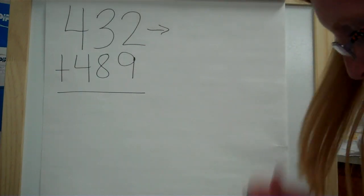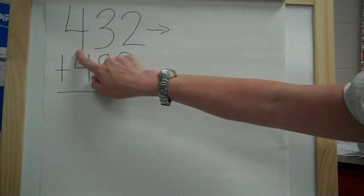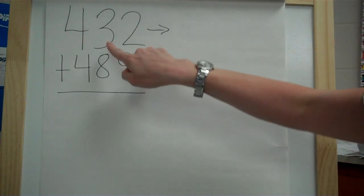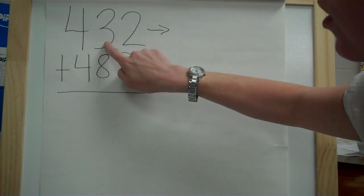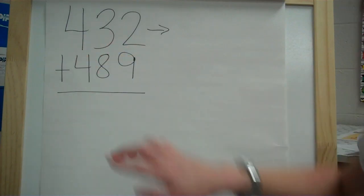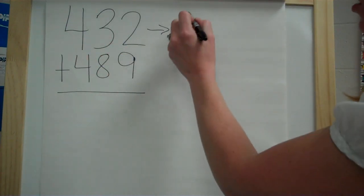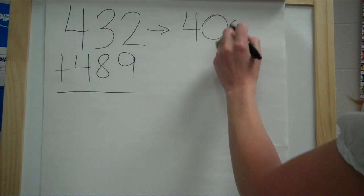Okay, so 432, if I round it to the nearest hundred, since there's a hundreds place, I'm going to round it to there. I look at the neighbor, and the three is below five, so it's going to leave the four alone. So 432 is closer to 400.